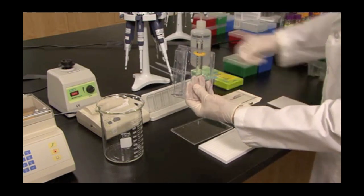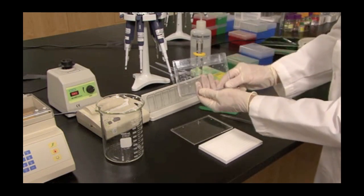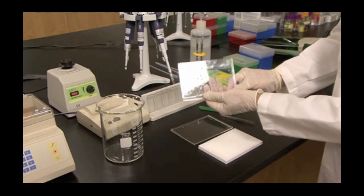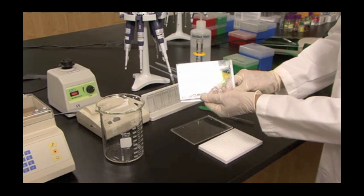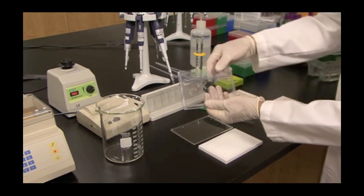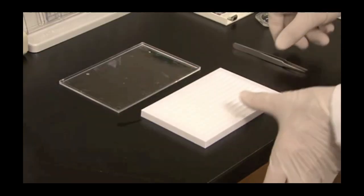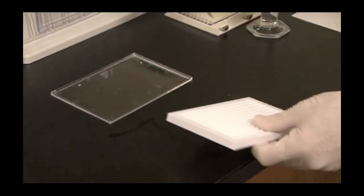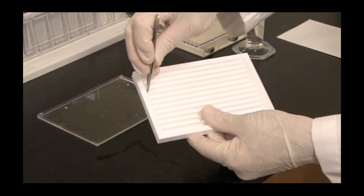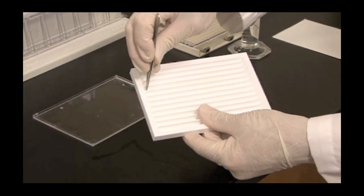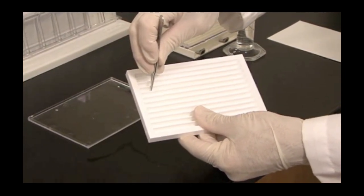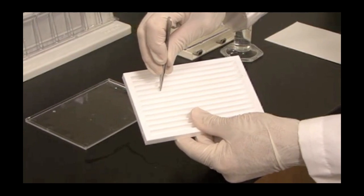We usually do this because unpolymerized acrylamide can cause anomalies in your second dimension gel if it's not removed. To remove the strip from the tray, place the forceps on the tray and gently push on the plastic backing of the gel to push the strip towards the angled edge.